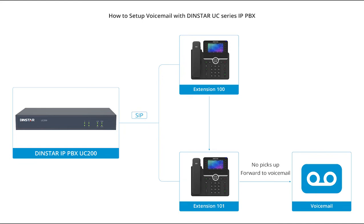Sometimes you're in the office and maybe you don't pick up the phone immediately when your desk phone rings, or maybe you're no longer in your office. If you are not able to pick up the phone within the ring time, you can set up call forward to voicemail, and the caller can leave a message, then you can call back later.